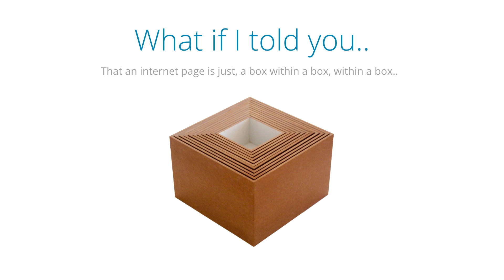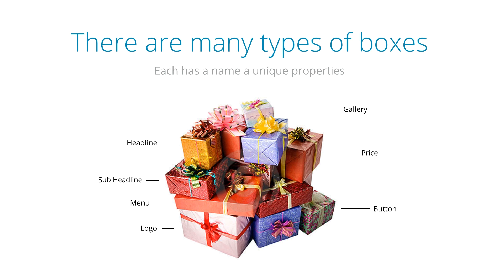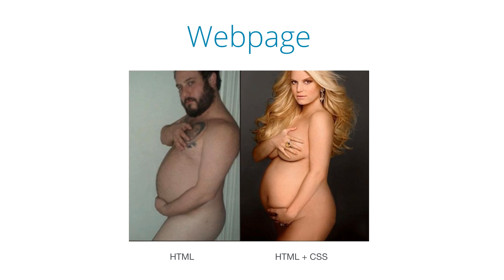This is actually what HTML is — it's defining those boxes and what's in those boxes. There are many types of boxes and each of them has a name and certain properties that define how they look. Some boxes are text, like headlines; others might be buttons, galleries, or logos. But basically this is the main premise of HTML and CSS: boxes within boxes, each with a name and different appearance.